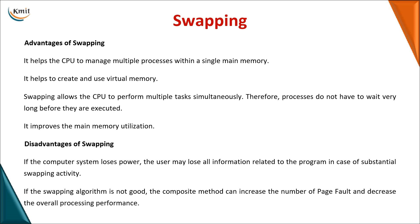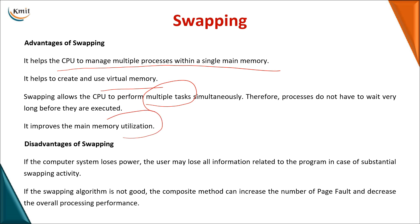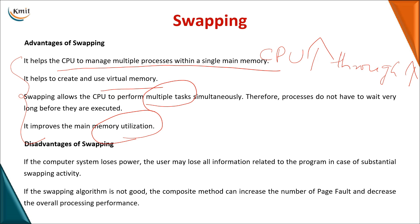The advantages of swapping include: supporting multiple processes within a single memory space, helping create virtual memory, enabling multiple tasks to be performed simultaneously, and improving memory utilization. Ultimately, all these advantages contribute to higher CPU utilization and increased system throughput.